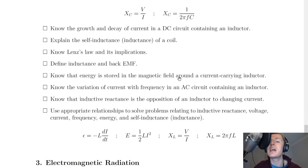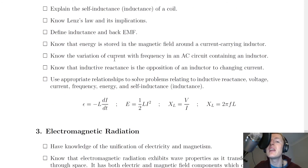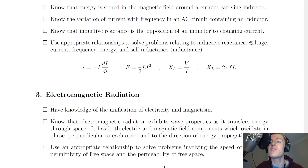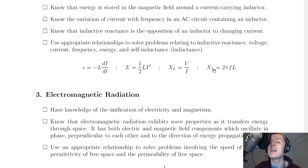Energy is stored in the magnetic field around a current-carrying inductor. If a switch is opened and current through an inductor suddenly stops, the magnetic field collapses and releases a large amount of energy, which can create flashes of light or sparks. In an AC circuit, current is inversely proportional to frequency for an inductor. Inductive reactance is the opposition of an inductor to changing current. The key equations are: back EMF ε equals minus L dI/dt; energy E equals half LI squared; XL equals V over I; and XL equals 2πFL.